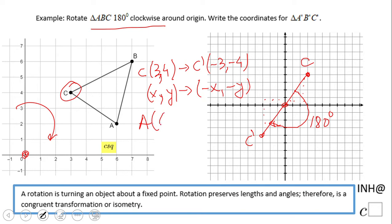A, 6 and 2 becomes A prime, negative 6, negative 2. B, 7 and 6 becomes B prime, negative 7, negative 6.